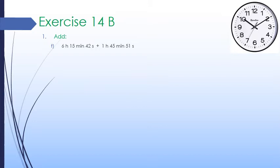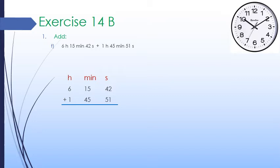We will add 6 hours 15 minutes 42 seconds and 1 hour 45 minutes 51 seconds. We make 3 columns: hour, the largest unit at the extreme left, and second, the smallest unit at the extreme right. We write 6 hours 15 minutes 42 seconds at the top and 1 hour 45 minutes 51 seconds at the bottom. We start the addition from the second column.